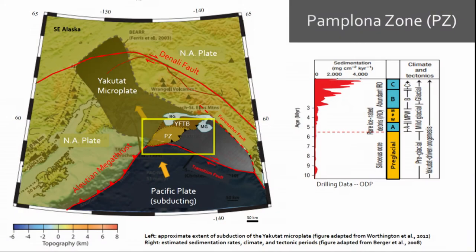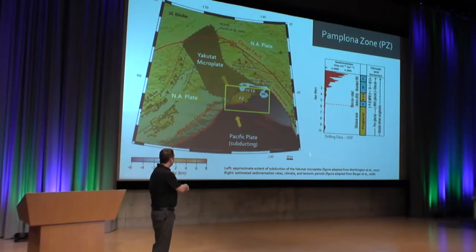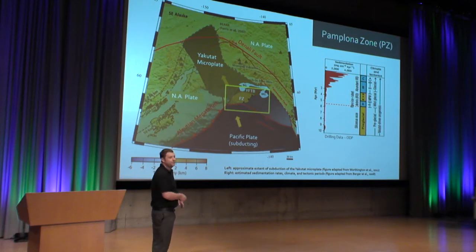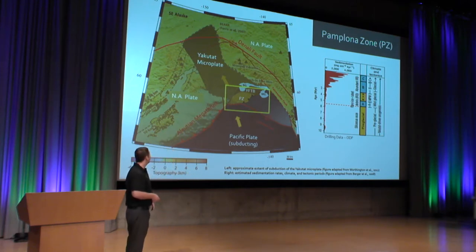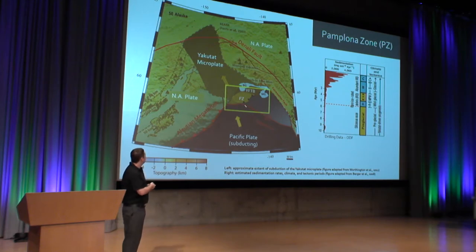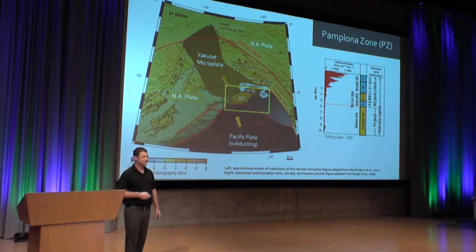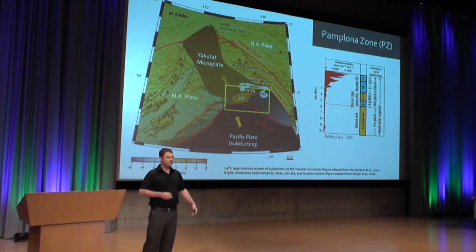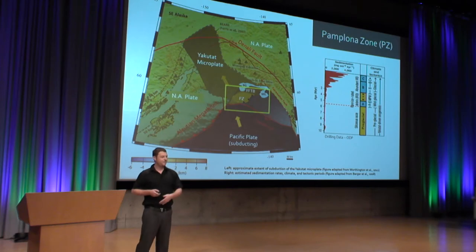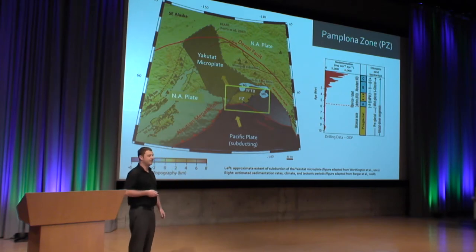Where are we in the world? We're in southeast Alaska. The San Andreas fault would lead down to California here. We're in this area where we have the Pacific plate subducting underneath the North America plate along the Aleutian megathrust. There's also a microplate sort of jammed into this corner, which causes some differences compared to farther southward California or along the Aleutian islands.